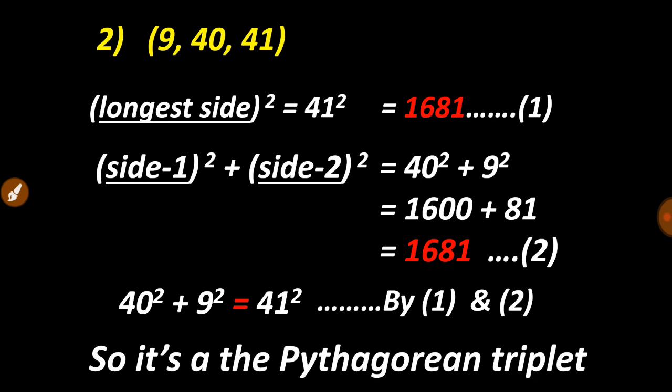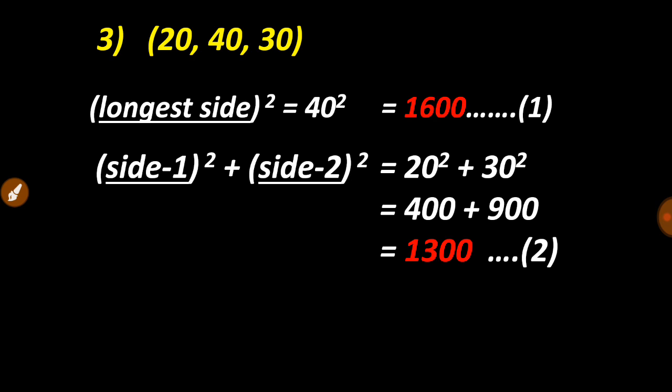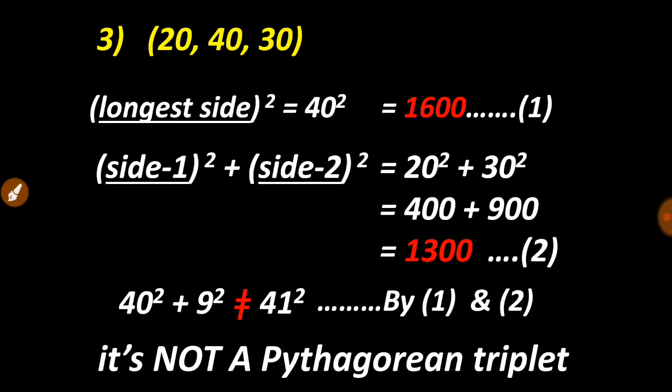Let's try another question. Here longest side is 40, so 40² is 1600. Sum of square of remaining two sides is 20² + 30², but over here we do not get these two steps the same. So we have to write not equal to sign and state that it is not a Pythagorean triplet.